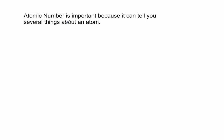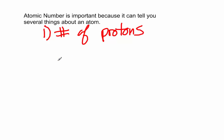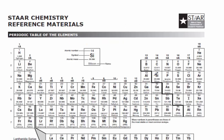The atomic number is important because it can tell you several things about an atom. The first one we've already said: it tells you the number of protons. So I could give you any atom on the periodic table, and you'd be able to tell me — aluminum has 13 protons, molybdenum has 42 protons, lithium has 3 protons, krypton has 36 protons.